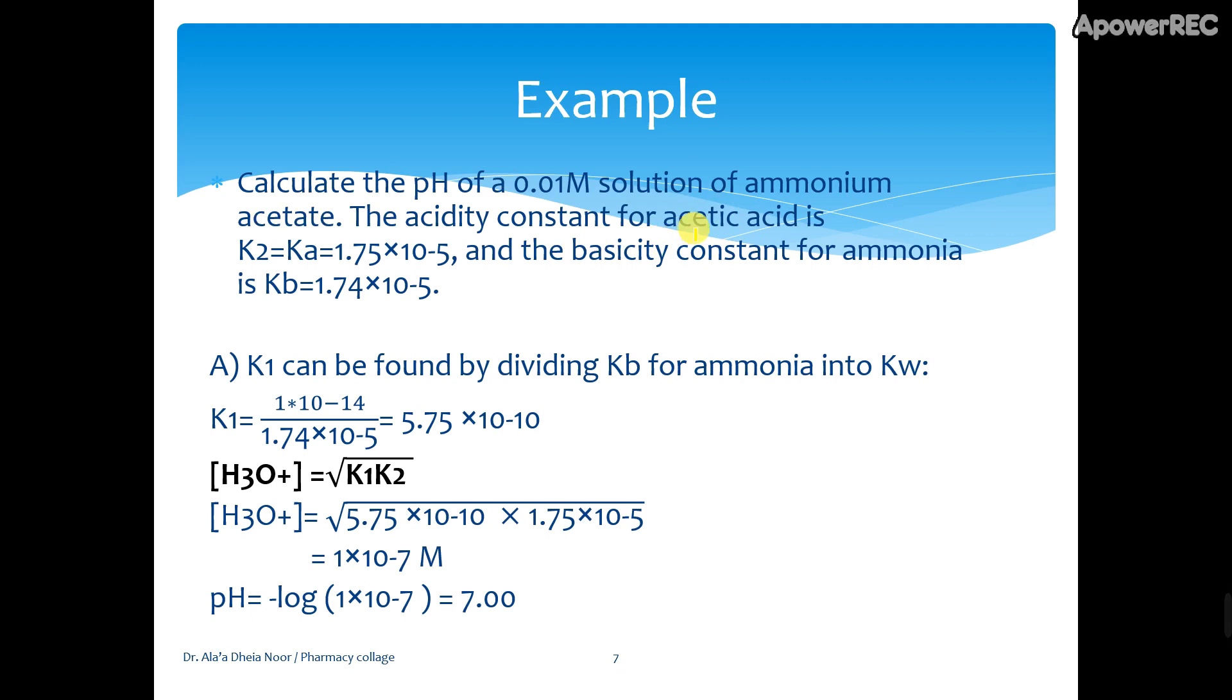The acidity constant of acetic acid is K2. The basicity constant of ammonia is Kb. From this equation, K1 is of the weak acid. K2 is for the conjugate acid, or vice versa, same thing since it's multiplication. K2 is the Ka of the weak acid which is given.